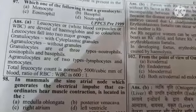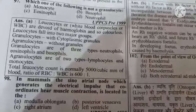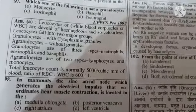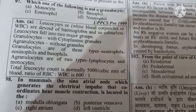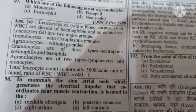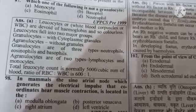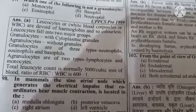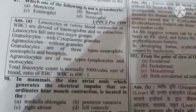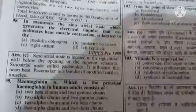Next question: in mammals, the sinoatrial node which generates the electrical impulse that coordinates heart muscle contraction is located in — Option A: medulla oblongata, Option B: posterior vena cava, Option C: right atrium, Option D: left ventricle. Option C will be the right answer: right atrium.